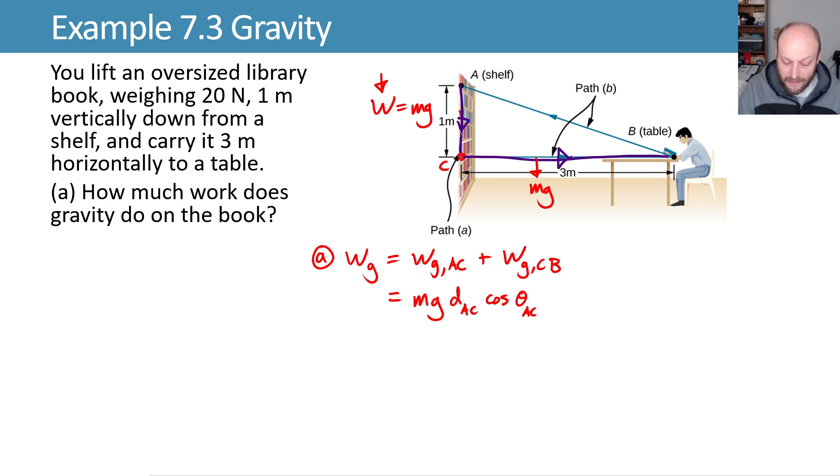Between A and C, gravity is acting downward and the book is moving downward. So the angle between them is 0 degrees. The cosine of 0 degrees gives us 1, so we're just left with the full value here.